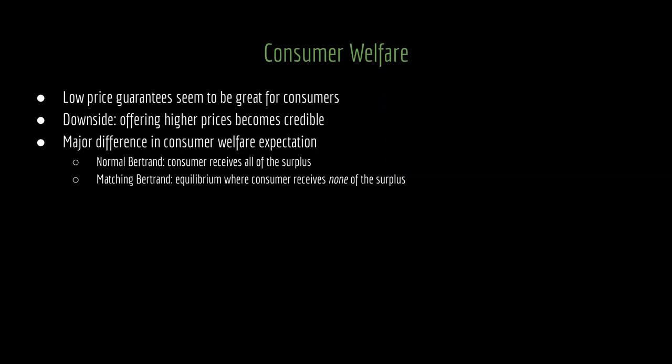This results in a major difference in consumer welfare. Under normal Bertrand competition, the consumer receives all of the surplus. With price matching, we have an equilibrium where the consumer receives none of the surplus — that's not great for the consumer, but it is great for the firms. This is a very big difference from the firm's perspective as well: under regular Bertrand competition the firms are in really bad shape, but with price matching the firms can actually be in pretty good shape. Hope you enjoyed this lecture. Hope to see you next time. Take care.